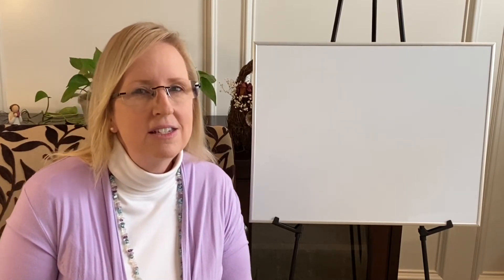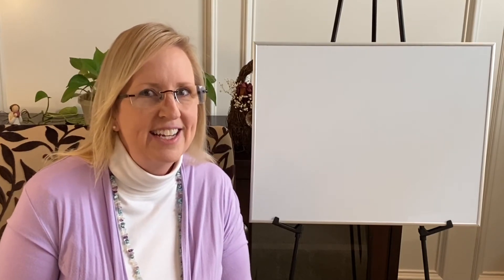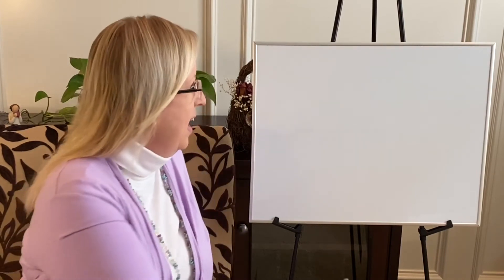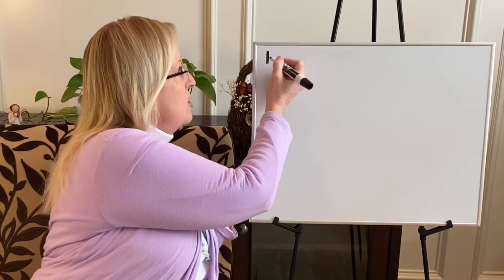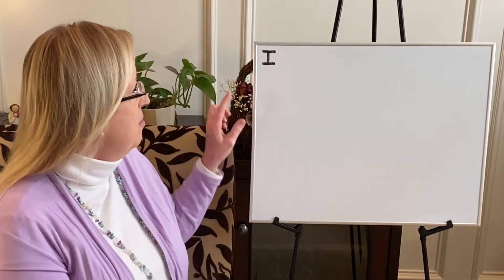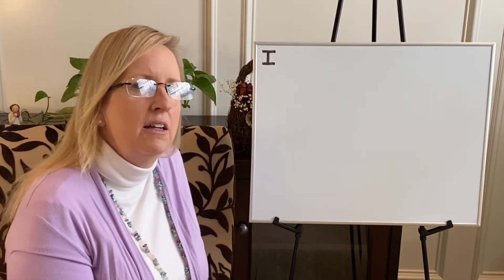We're definitely going to write at least two sentences because that's where we are in our writing now. Here we go. I am thinking of something that I can do that's really more fun with two people. So I'm going to start with the sight word I, and I start in the upper left hand corner with a straight line down and horizontal lines across on the top and the bottom. I. I like.